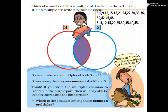Likewise, we will write multiples of 5: 5, 10, 15, 20, 25, 30, 35, 40, 45. The numbers which are multiples of 3 we write here; the numbers which are multiples of 5 we write here. And the common multiples like 15 — 15 is a multiple of 3 as well as of 5, so we write 15 in the common area. Likewise, 30 is a common multiple of 3 and 5 also. Likewise, 45 is a common multiple of 3 and 5 also. So we write 15, 30 and 45 in the common part.